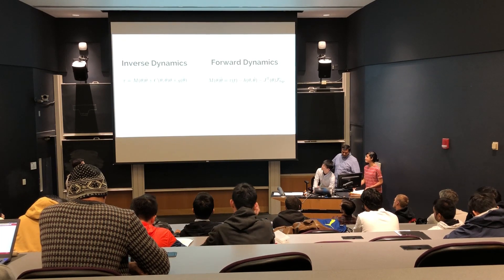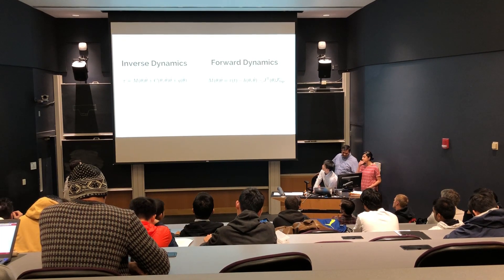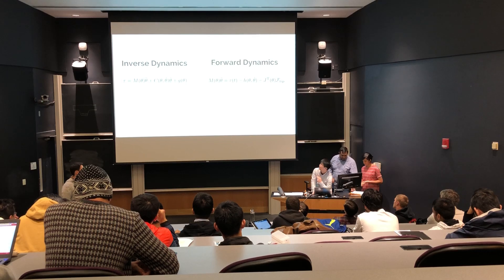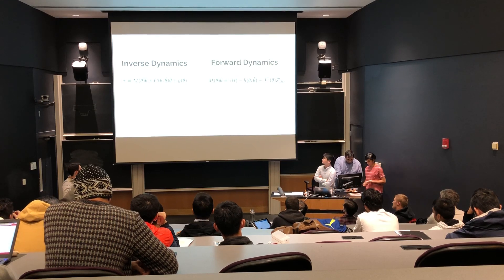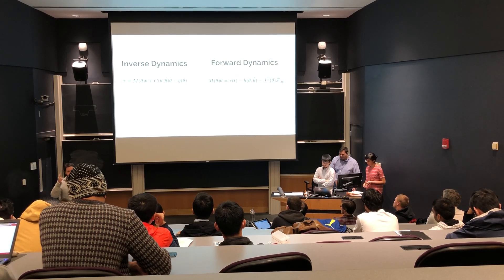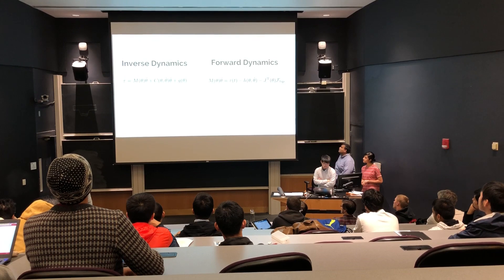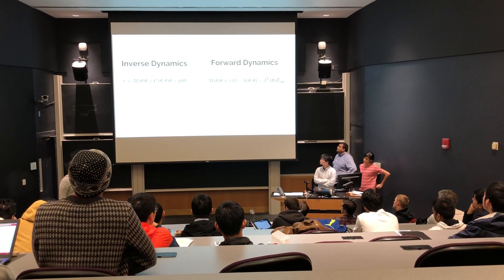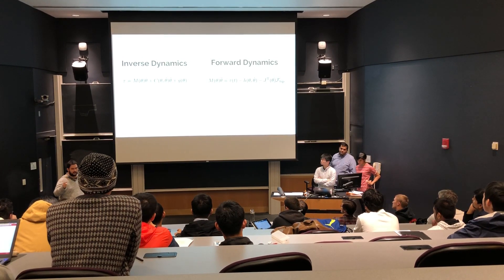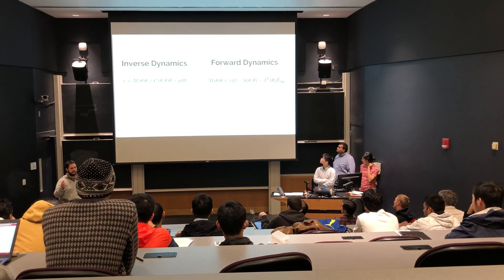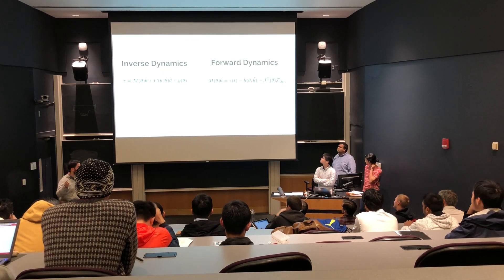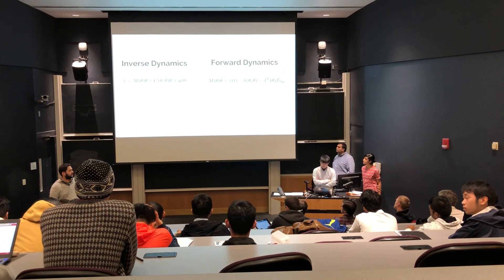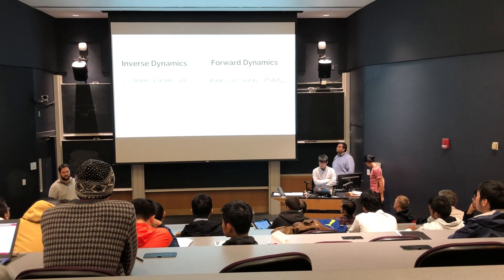As we learned earlier, the inverse dynamics problem is the problem where given theta, theta dot, and theta double dot, find the joint torques tau. The forward dynamics problem is the reverse: given theta, theta dot, tau, and also a wrench f-tip, find the joint accelerations theta double dot.